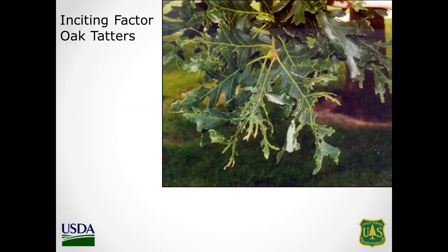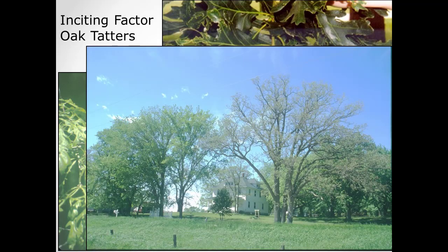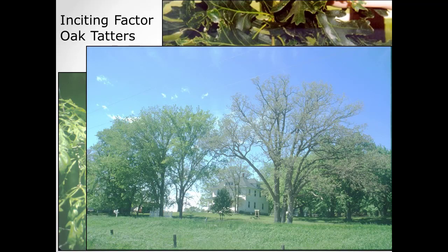Oak tatters is another emerging problem. I'm fairly convinced that oak tatters is usually caused by an herbicide issue — the tree is missing intravenal tissue, so missing photosynthetic area. It can be pretty extreme, but trees leaf out again; that takes energy. Even if they re-flush and look okay by end of season, if they have to do that year after year, it's going to stress your tree. The entire canopy can be affected.